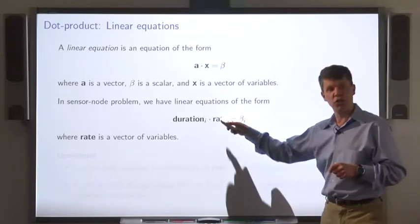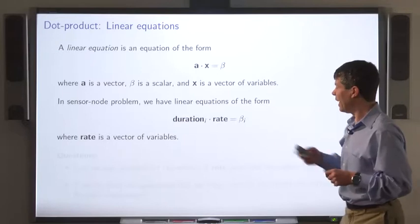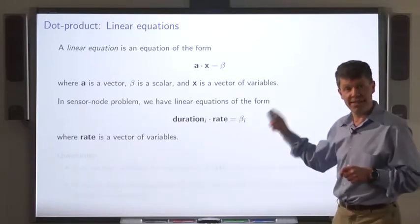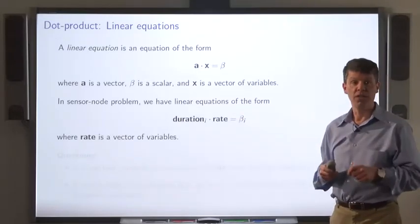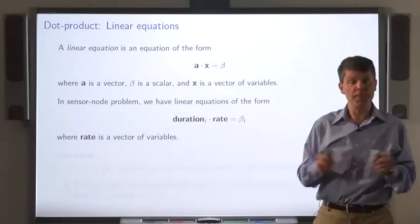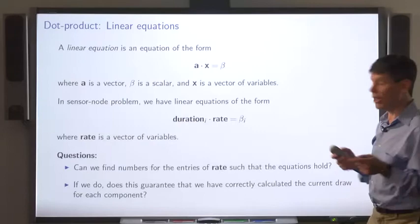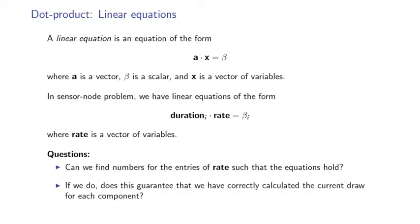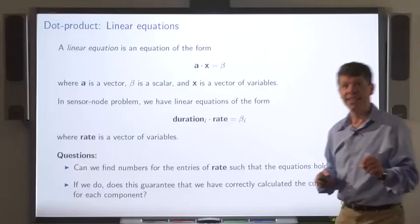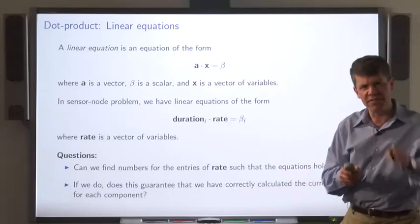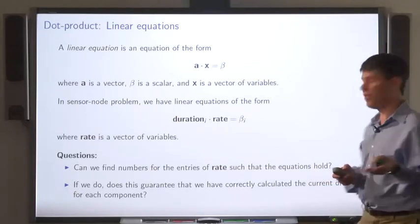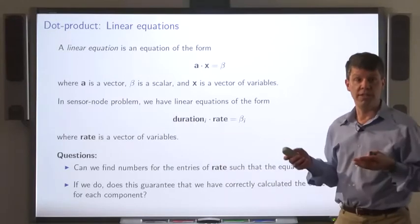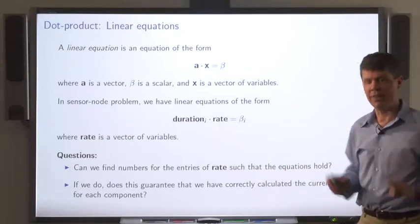Now, this vector rate is actually a vector of variables. And the idea is that by solving this collection of equations, we can figure out what the entries of the rate vector are. That is, how much current is drawn by each of the hardware components. Now, there are questions that come up. Can we use these equations to find numbers for the rate of consumption of the individual hardware components? And supposing we find those equations, is that enough to pin down precisely what those values are? Or is it, in fact, that there might be multiple solutions to this list of equations? The answers to these questions will have to wait a little bit.